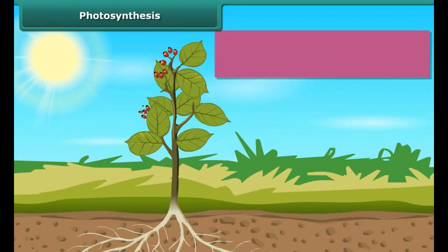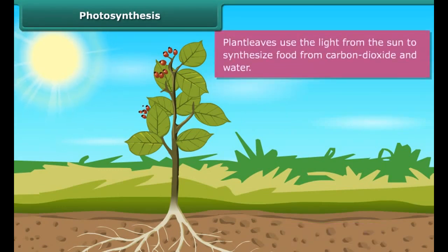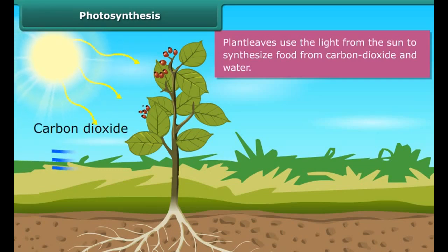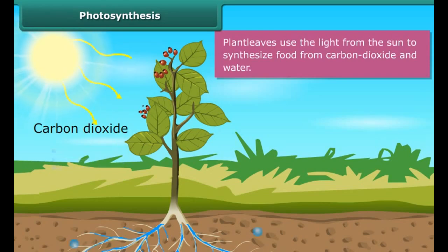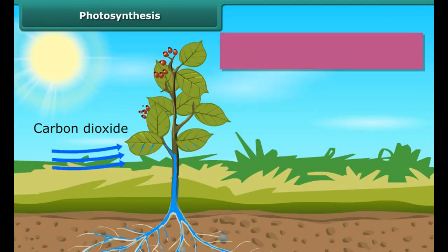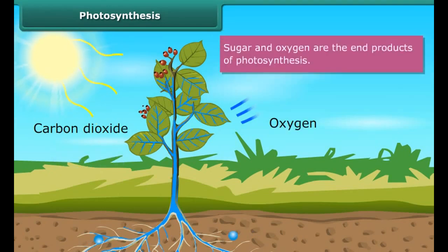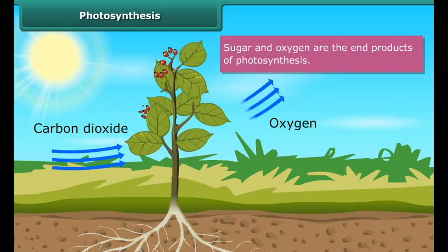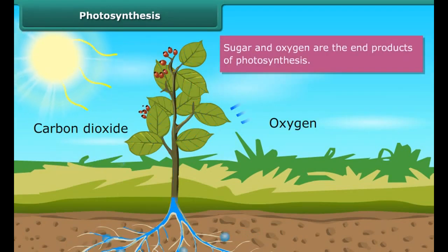In this process, plant leaves use the light from the sun to synthesize food from carbon dioxide and water. Sugar and oxygen are the end products of photosynthesis.